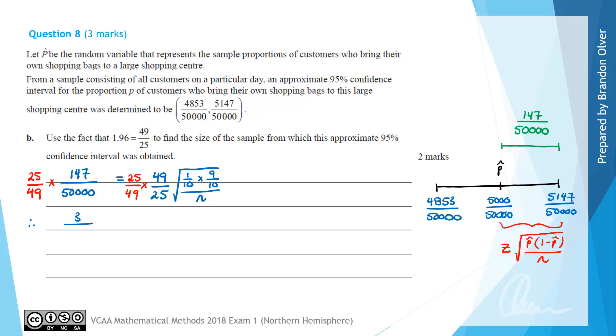On the right side, 25 and 25 cancel, 49 and 49 cancel, leaving the square root of 9/100N. Since 1/10 times 9/10 is 9/100, and instead of dividing by N, we multiply by the reciprocal, giving the square root of 9/100N.